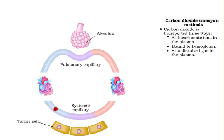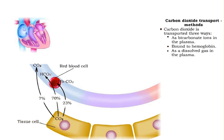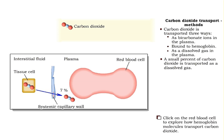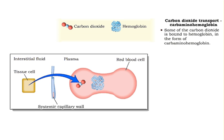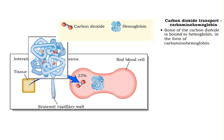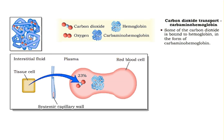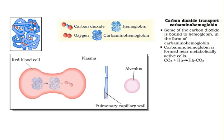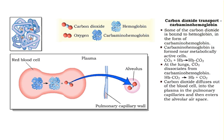Carbon dioxide is picked up at the tissues and carried in the blood to the lungs for disposal in three forms: as bicarbonate ions, as carbon dioxide bound to hemoglobin, and as a dissolved gas. A very small percent of carbon dioxide is transported in the plasma as a dissolved gas. A slightly larger percent is transported bound to hemoglobin as carbaminohemoglobin, which is formed near metabolically active cells and carries carbon dioxide from systemic cells to the lungs. When the blood reaches the lungs, carbon dioxide dissociates from the hemoglobin and diffuses out of the plasma into the alveolar airspace.